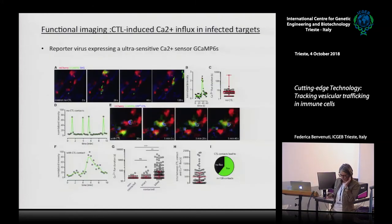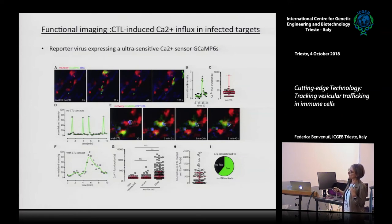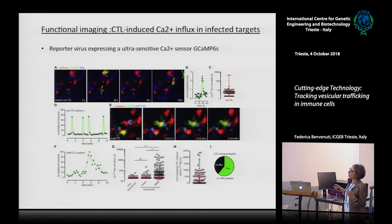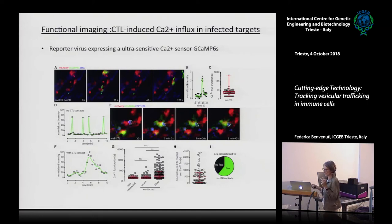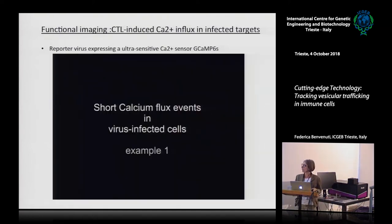A further refinement used a reporter: the virus was engineered to express a calcium sensor. This allowed monitoring calcium fluxes corresponding to hits of cytotoxic granules — how many spikes you need before a cell dies, and how many spikes leads to death. These calcium flux reporters document the killing event in real time.